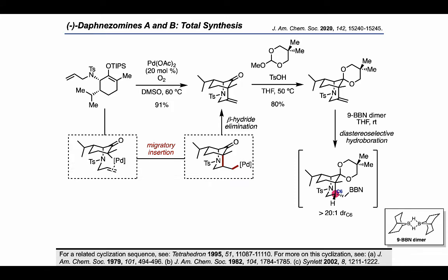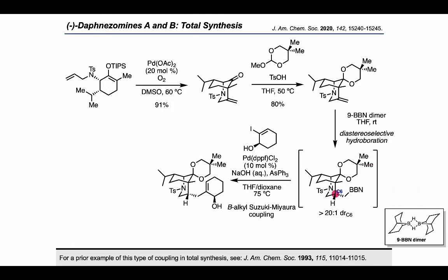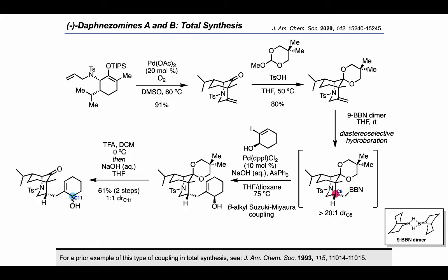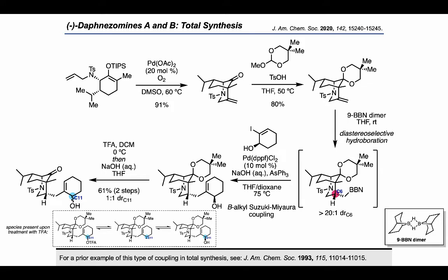Using the 9-BBN dimer, they carried out a diastereoselective hydroboration to set the stereochemistry at C6. Importantly, they found that it was necessary to have the bulky ketal present in order to get this step to happen diastereoselectively. A subsequent boron-alkyl Suzuki-Miyaura cross-coupling resulted in the successful attachment of the cyclohexene fragment. Treatment with TFA followed by sodium hydroxide resulted in removal of the ketal, at which point the authors observed significant epimerization at C11 through an SN1-type pathway en route to an intermediate trifluoroacetate ester.